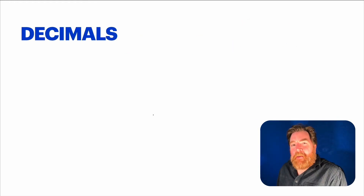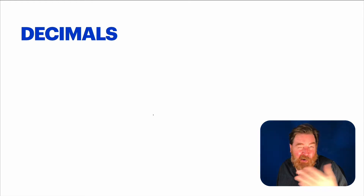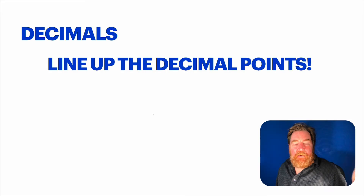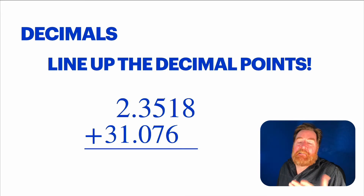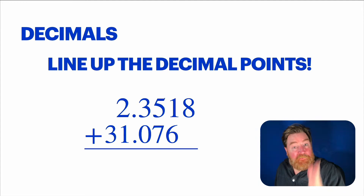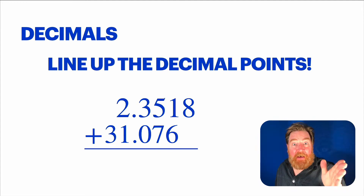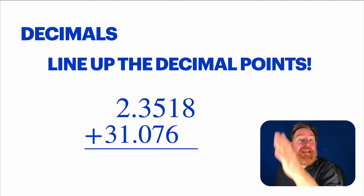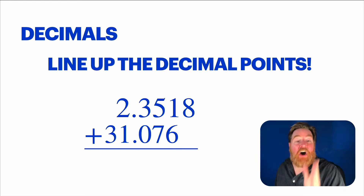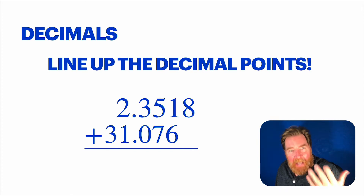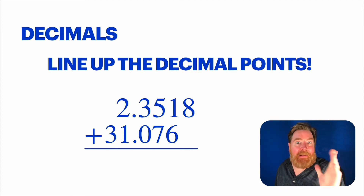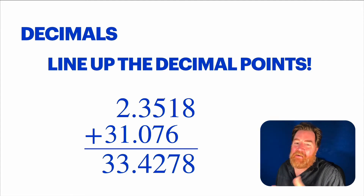Decimals. When you're adding decimals, you just line up the decimal point. But here's why: we line up the decimal points not so much for the decimal points themselves, but for the decimal place values to line up. We need to add tenths with tenths, hundredths with hundredths, thousandths with thousandths. That's why we line up the points — because that lines up all the place values. Then you just add like normal.